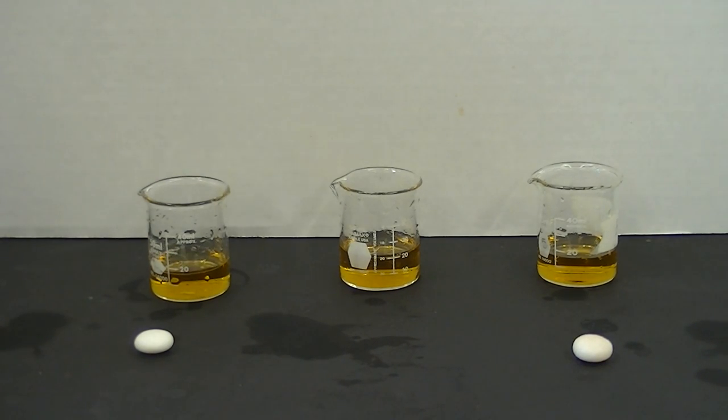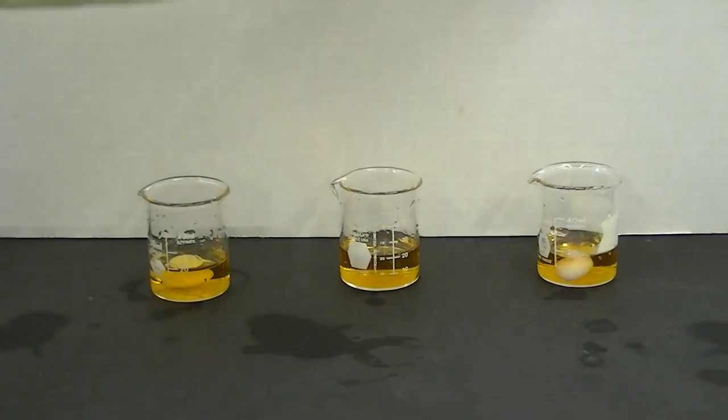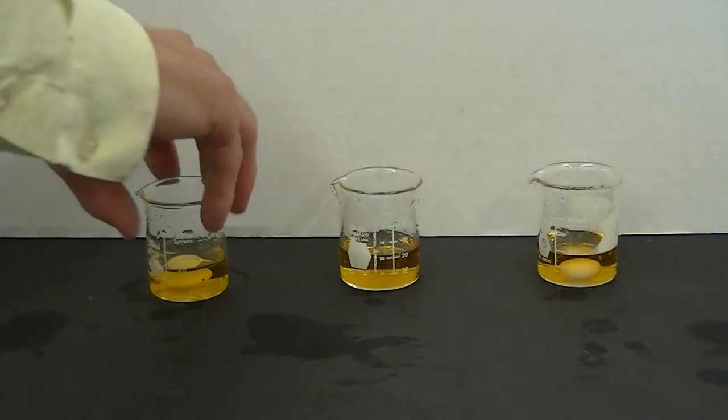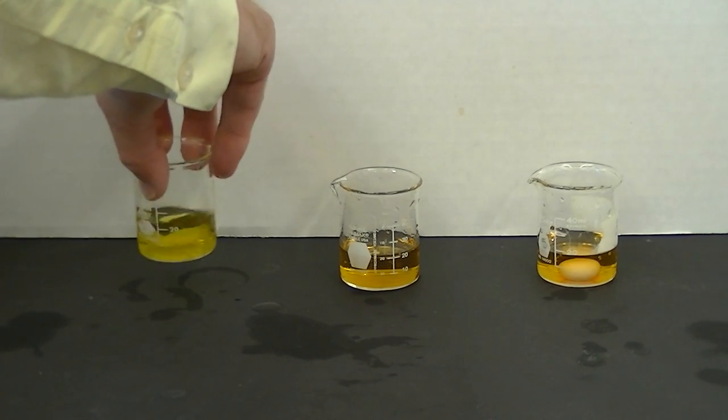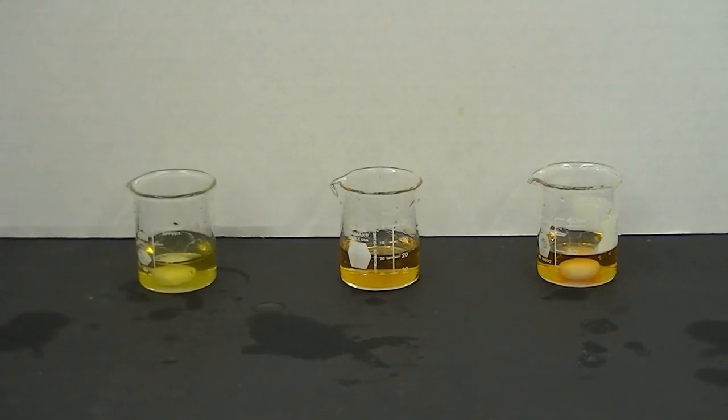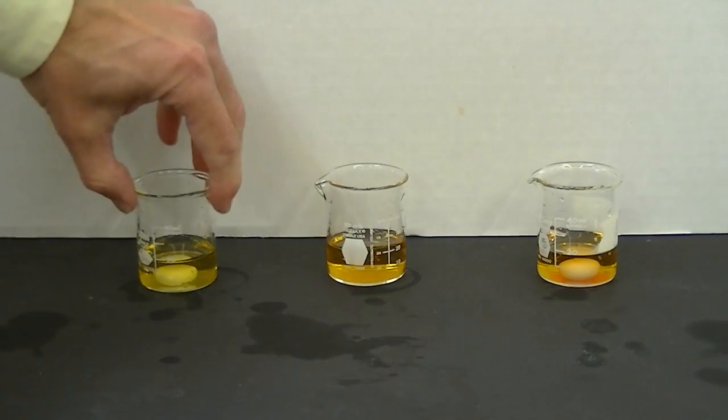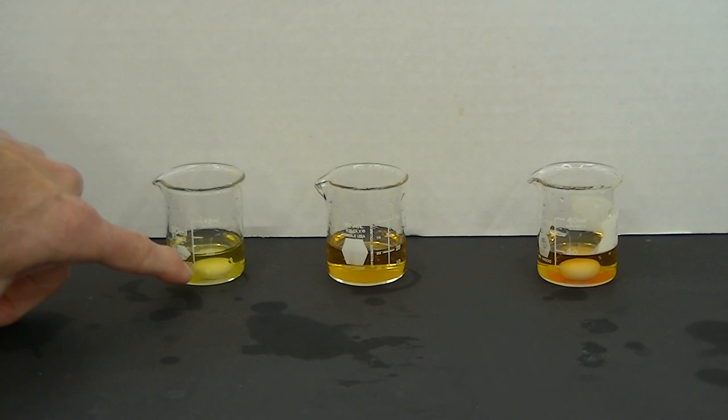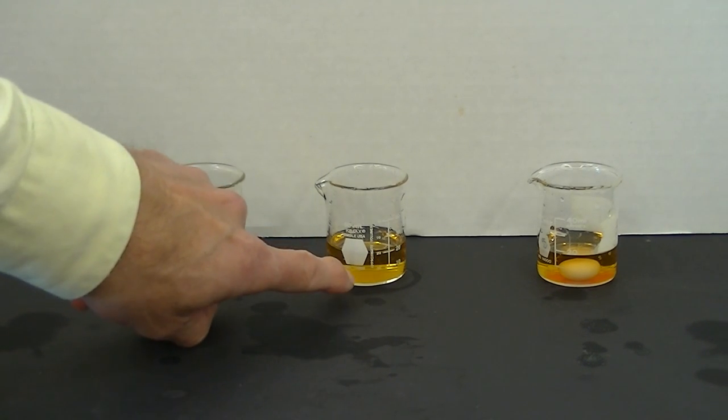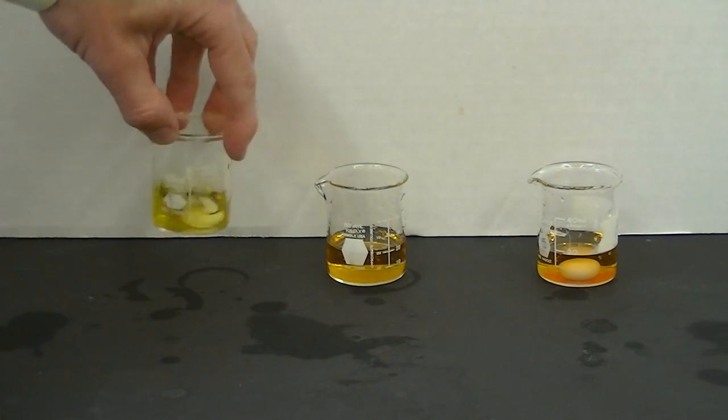I'm going to place them each into these outside beakers and then I'm going to swirl. What you'll notice with this particular Mentos candy is the color is shifted from a yellowish color to maybe a little bit green. That indicates the presence of a base because the yellow is slightly acidic and the green means that this is somewhat neutral.